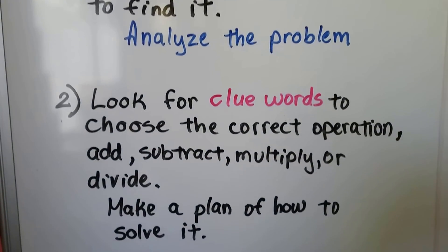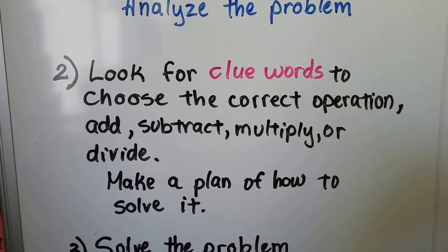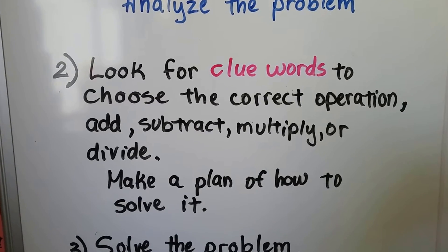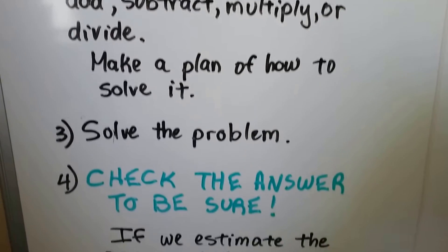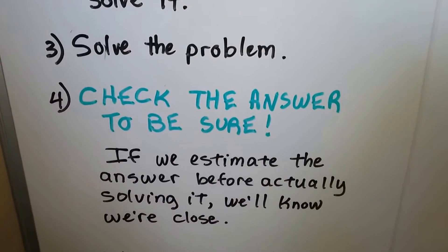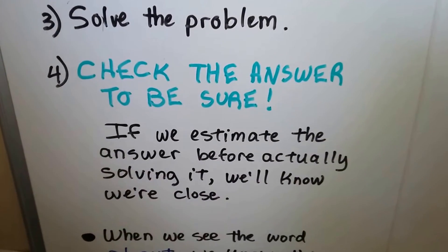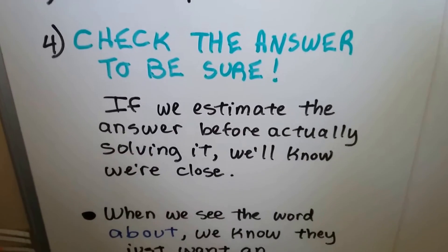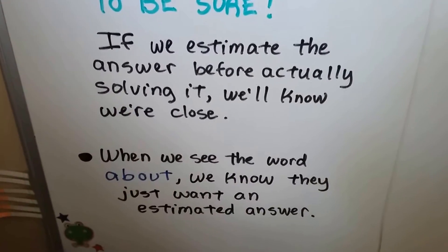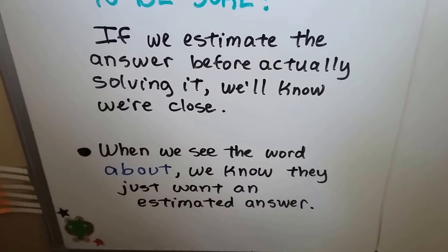We look for clue words to choose the correct operation of add, subtract, multiply, or divide. We make a plan on how to solve it. Then we solve the problem. Here's the biggie: check the answer to be sure. If we estimate the answer before actually solving it, we'll know we're close. When you see the word 'about,' we know they just want an estimated answer.